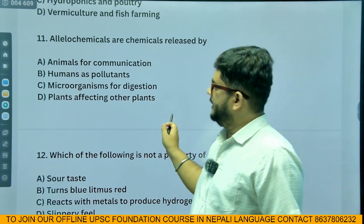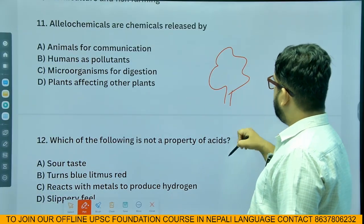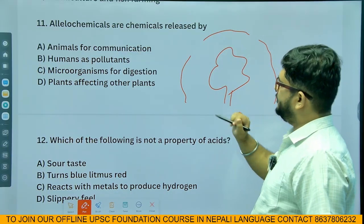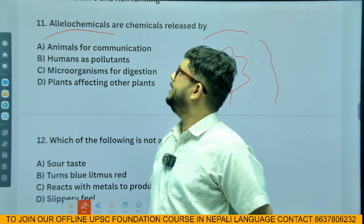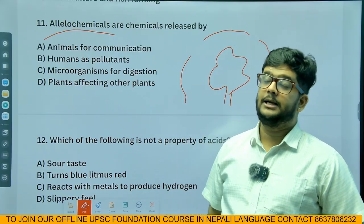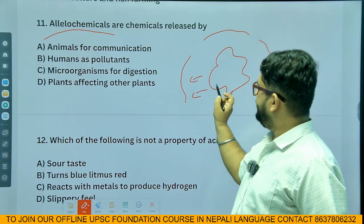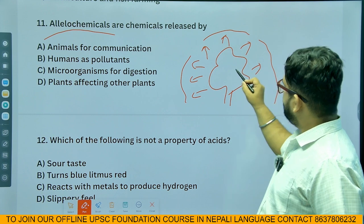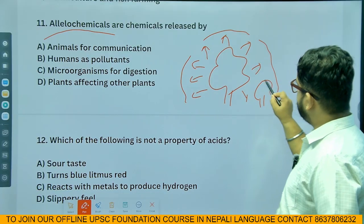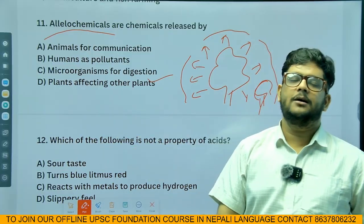Allelochemicals are chemicals released by plants that impact their surrounding plants. For example, a walnut tree releases allelochemicals that prevent other plants from growing nearby. So the answer is: plants affecting other plants.